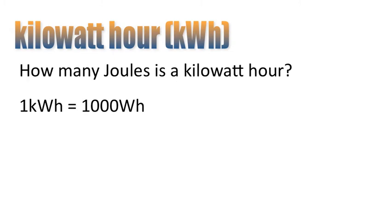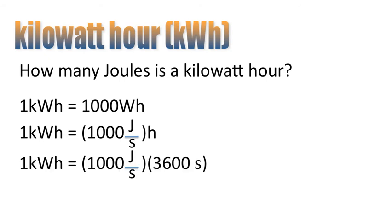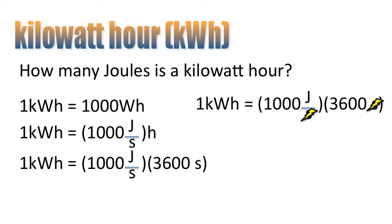So how many joules is a kilowatt hour? Let's do this unit conversion. One kilowatt hour — kilo means a thousand, so a kilowatt hour is the same as a thousand watt hours. A watt is a joule per second, so one kilowatt hour is a thousand joules per second multiplied by an hour. An hour is 3,600 seconds. The units cancel and we're left with: one kilowatt hour is equivalent to 3,600,000 joules.